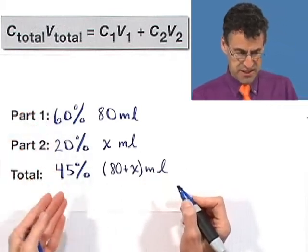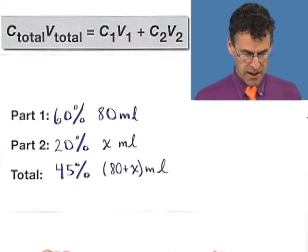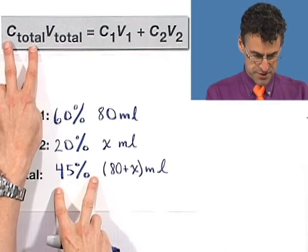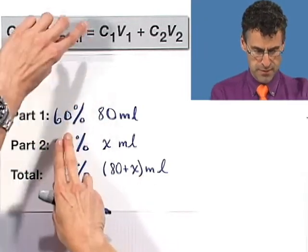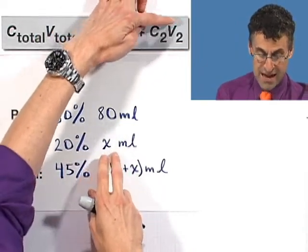And that actually sets up how to set up this mixture model. Because all I have to do is, on this side, I see that I have 45% times this volume is going to equal this concentration times 80 plus this concentration times x.